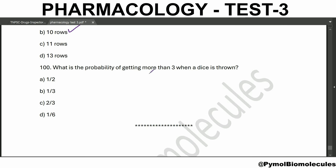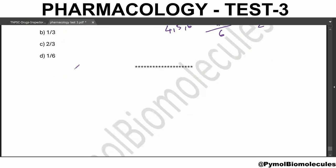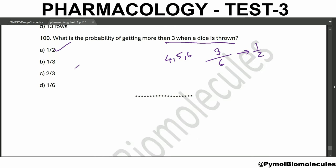What is the probability of getting more than 3 when a dice is thrown? More than 3 means 4, 5, or 6 - that is 3 favorable outcomes out of 6 total. So the answer is 1/2.